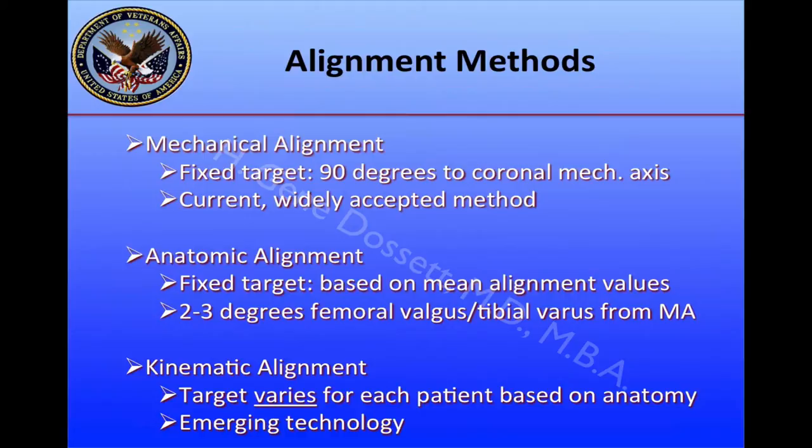When we look at alignment methods, we have mechanical alignment, which is our current widely accepted method — a fixed target at 90 degrees to the coronal mechanical axis, specifically for the femur and the tibia. Anatomic alignment is a fixed target based on mean alignment values, which tend to be two to three degrees increased femoral valgus and tibial varus from the mechanical axis target. And finally, we have kinematic alignment, where the target varies for each patient based on anatomy. The difference between kinematic alignment and mechanical or anatomic alignment is that the target varies rather than being fixed.